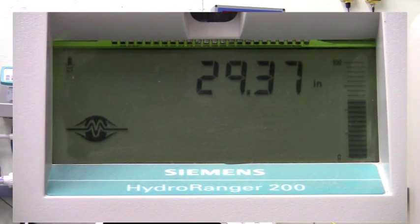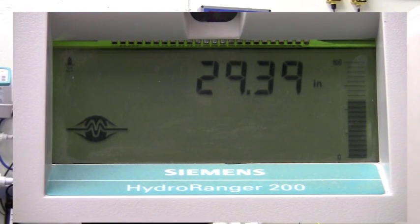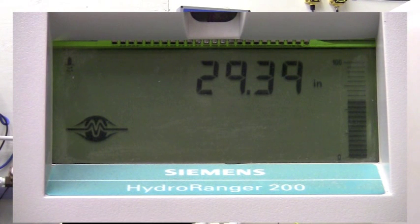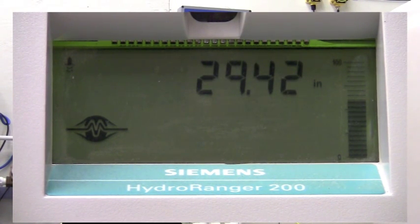Here we see the display of the Hydra Ranger. During normal operation the display shows level and engineering units, a bar graph showing level on a 0 to 100 percent scale, and relay status.